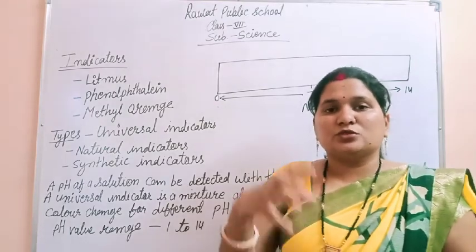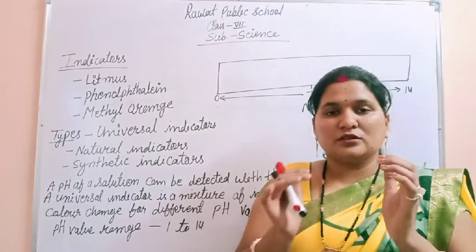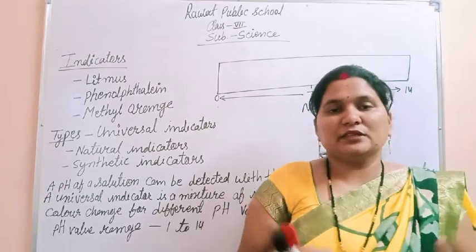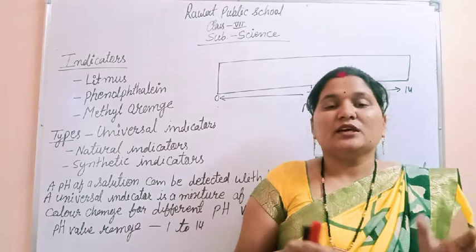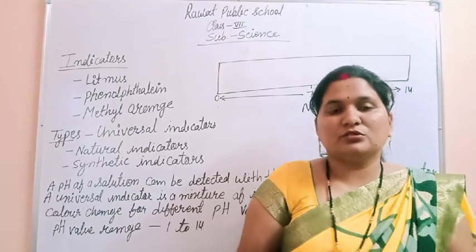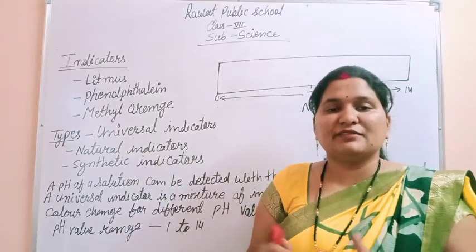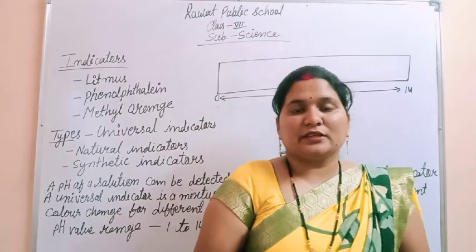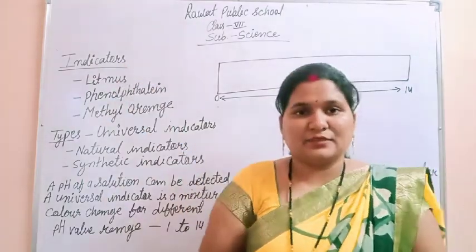An indicator is a substance that changes color when it comes into contact with an acid or a base. This color change helps us identify whether the substance is acidic or basic in nature. Such substances are called indicators.